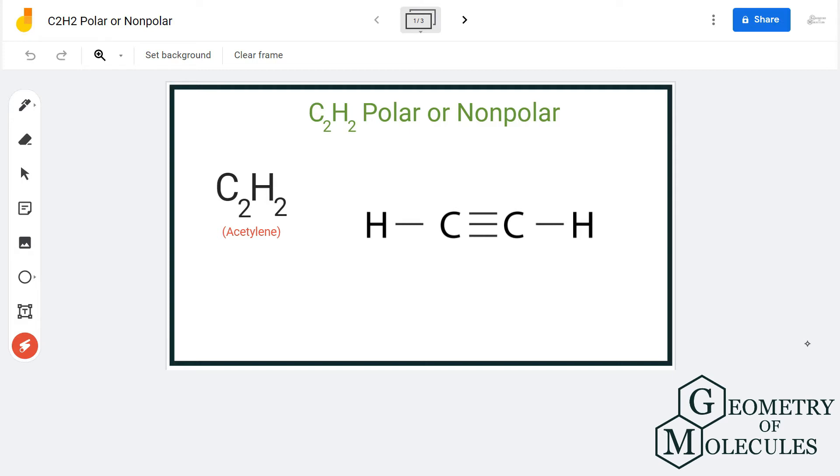To understand the polarity of any molecule, we have to check the Lewis structure and check for various parameters such as the difference in electronegativities of the atoms, the shape of the molecule, dipole moment in the molecule, and the distribution of charges.